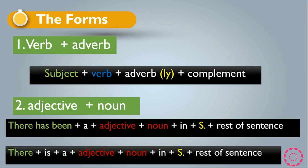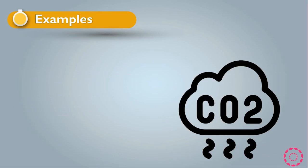So we have two options for the adjective plus noun form, but only one rule for the verb plus adverb form. Let's see some examples.